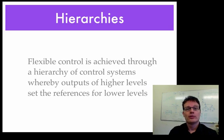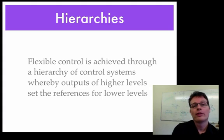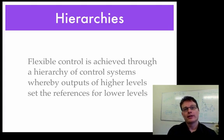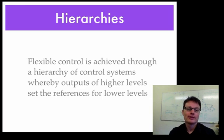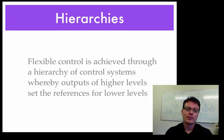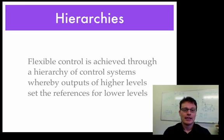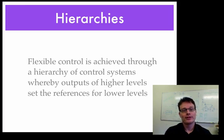A single control unit can only control one variable and so there need to be ways of organising these units so that they can control more complex experiences and perceptions and can be more flexible. This is achieved by a hierarchy of control systems. In this hierarchy the higher levels set the references, set the goals for the lower levels.